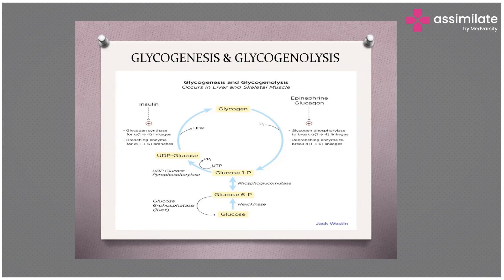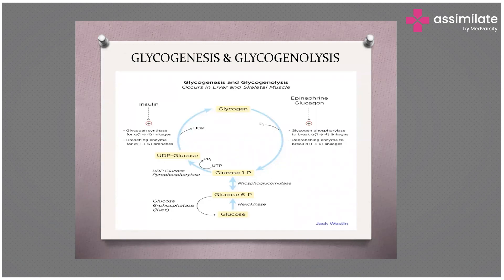Now looking at the right side to understand glycogenolysis: glycogen is broken down into glucose-1-phosphate, then in a reversible step into glucose-6-phosphate, and finally into glucose. Here, glucagon — a hyperglycemic hormone — along with epinephrine, norepinephrine, and cortisol are the four hyperglycemic hormones. Glucagon specifically stimulates the enzyme glycogen phosphorylase, which breaks the linkages within glycogen and separates it into glucose-6-phosphate. This is the process of glycogenolysis.